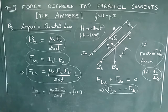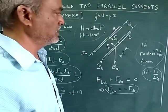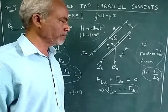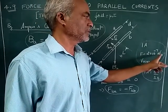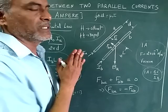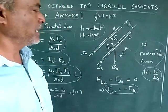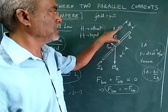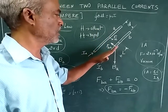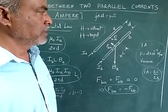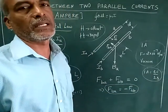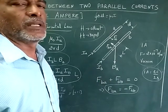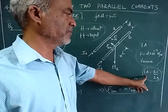Now we will go for the 1 ampere definition. Suppose we have two infinitely straight conductors separated by a distance of 1 meter. These two conductors experience a force of 2×10⁻⁷ newton per meter, and the entire setup is enclosed in a vacuum. In that case, we can say the current carried by each conductor is 1 ampere — meaning the flow of charge is 1 coulomb per second.